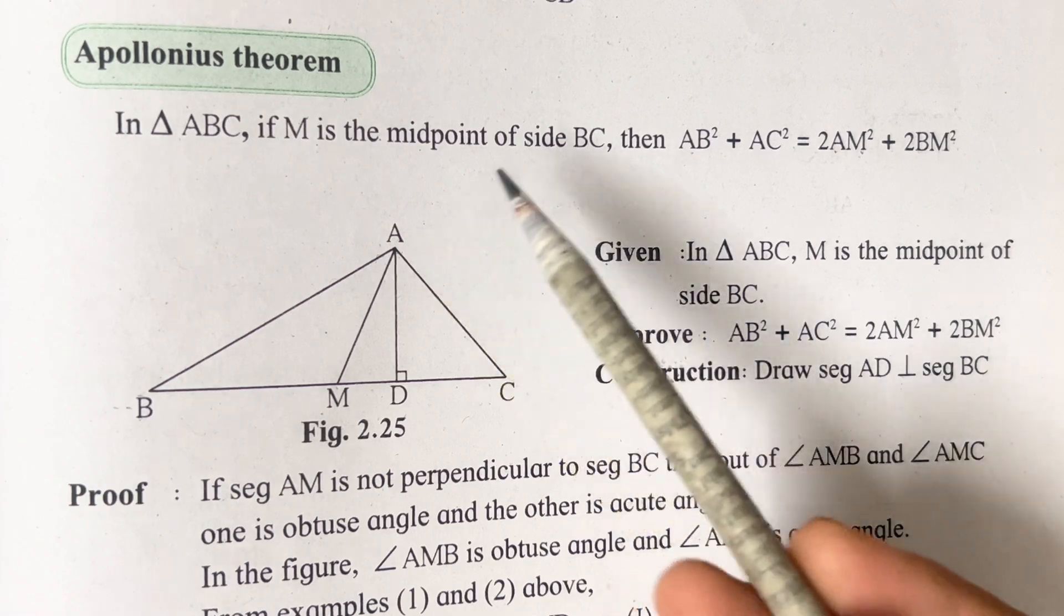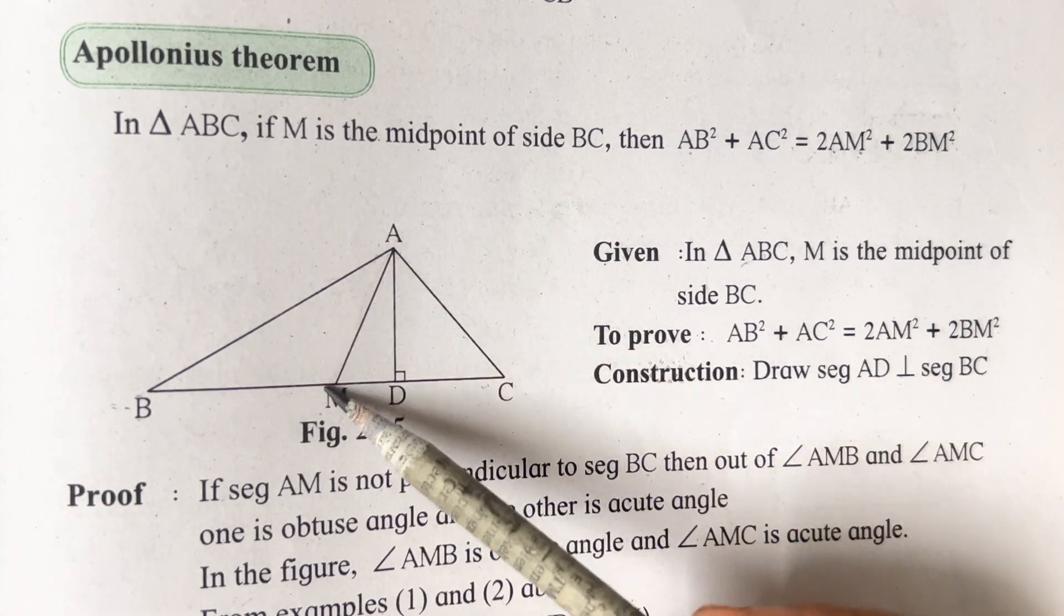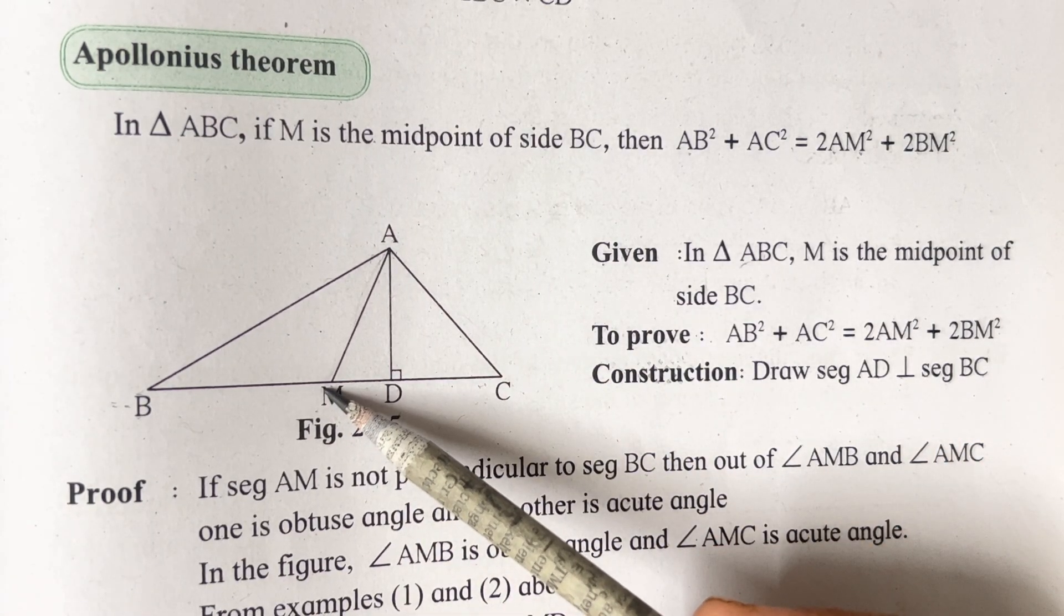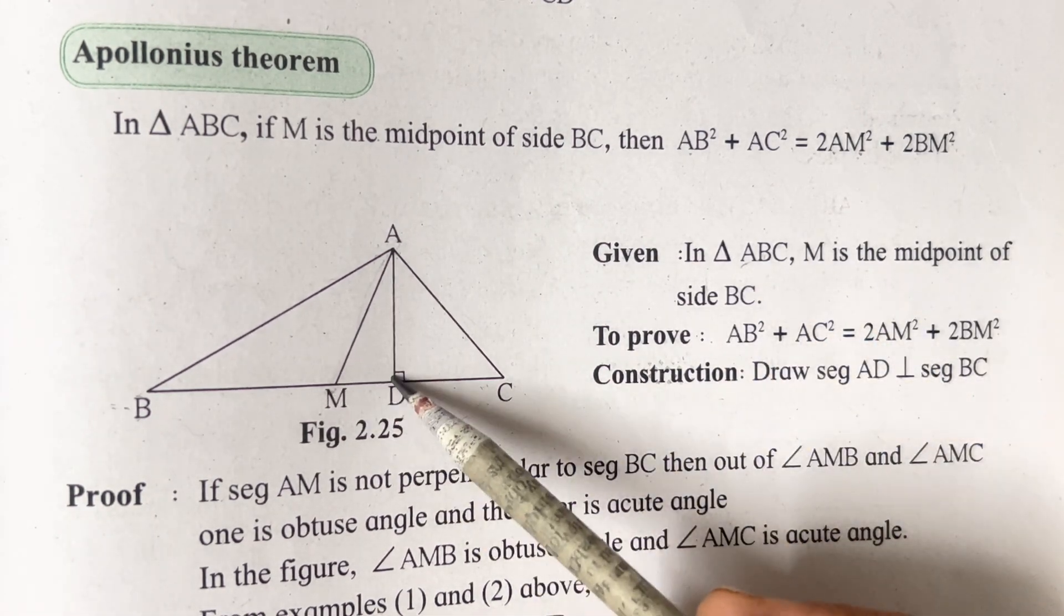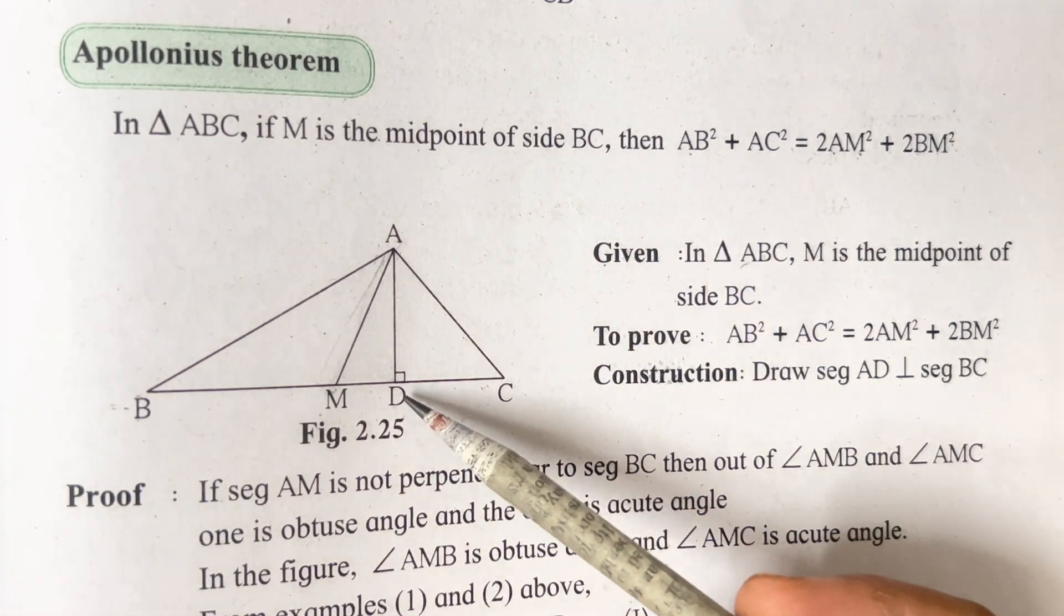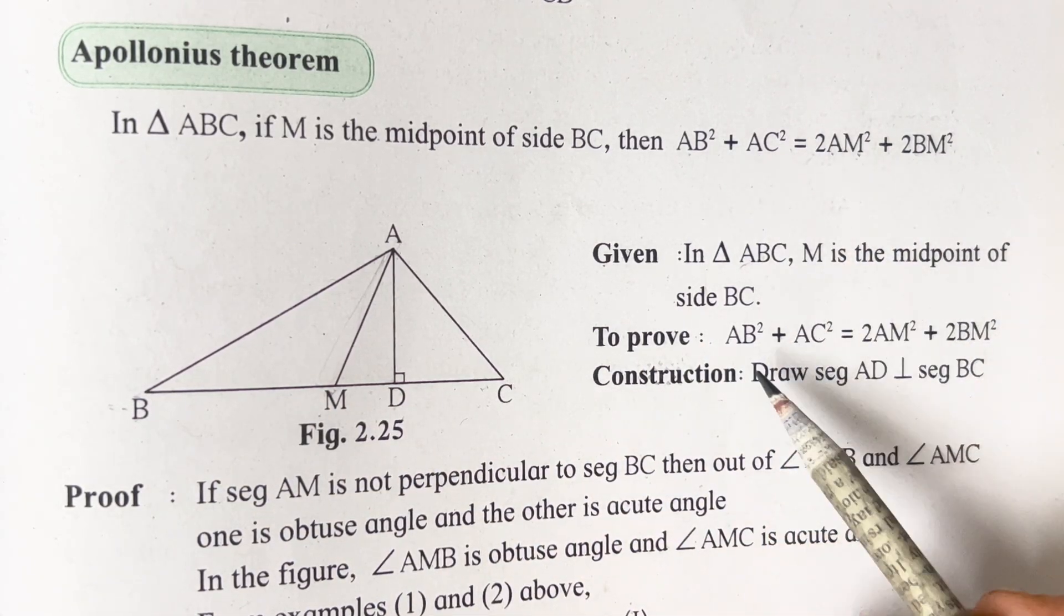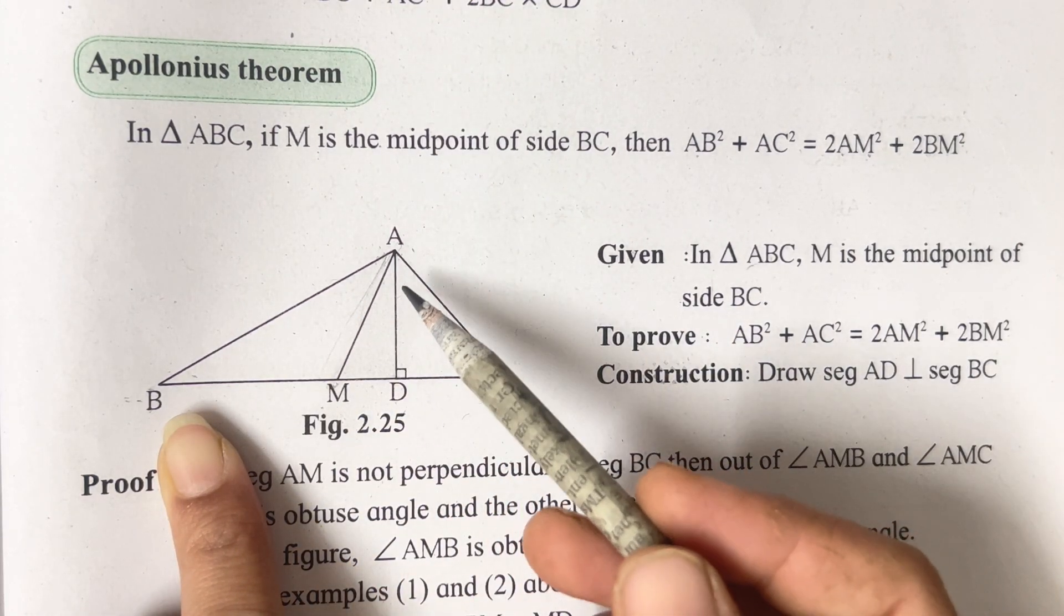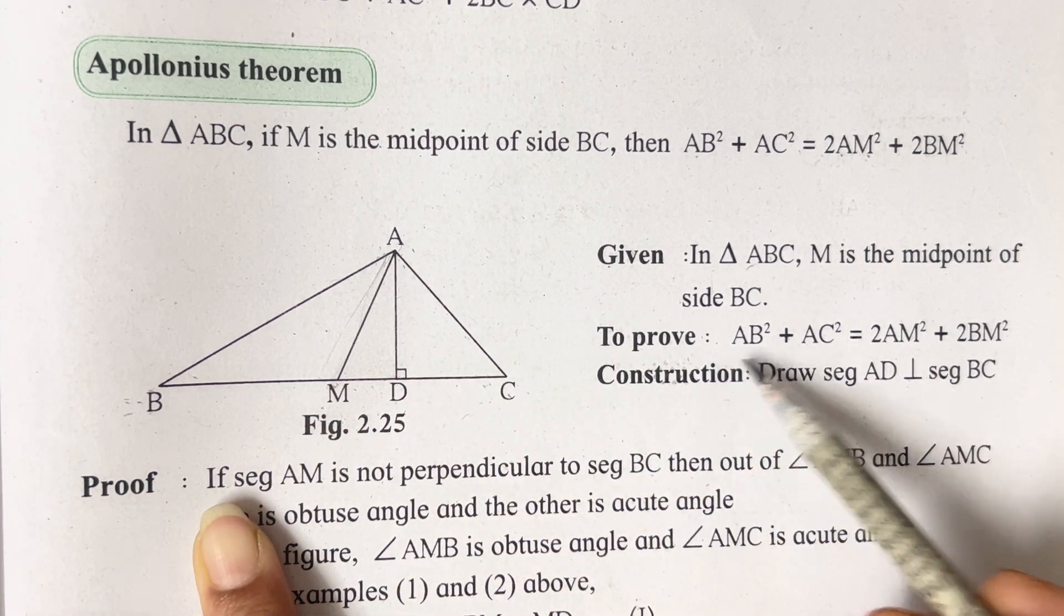Now, what has been given? It has been given that ABC is a triangle, M is the midpoint. Remember, M is the midpoint and this is a perpendicular drawn. Don't get confused with these two lines. This is a midpoint and this is a perpendicular drawn on BC. Now, what we have to prove? We have to prove AB square plus AC square is equal to 2AM square plus 2BM square.